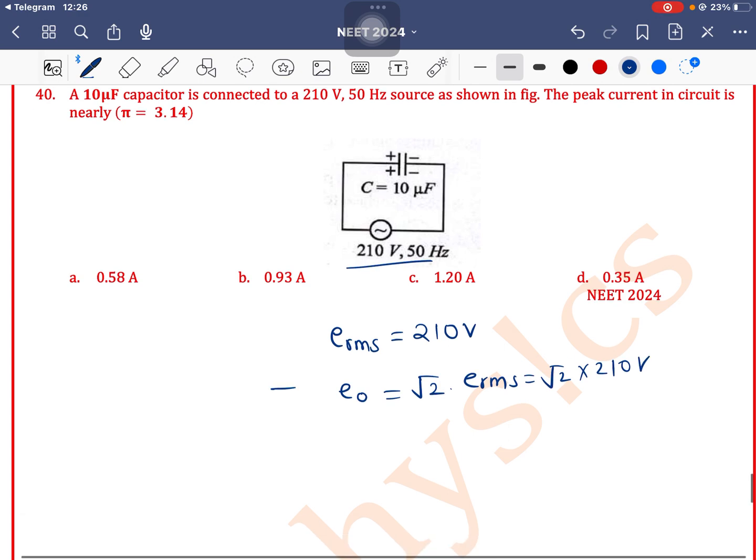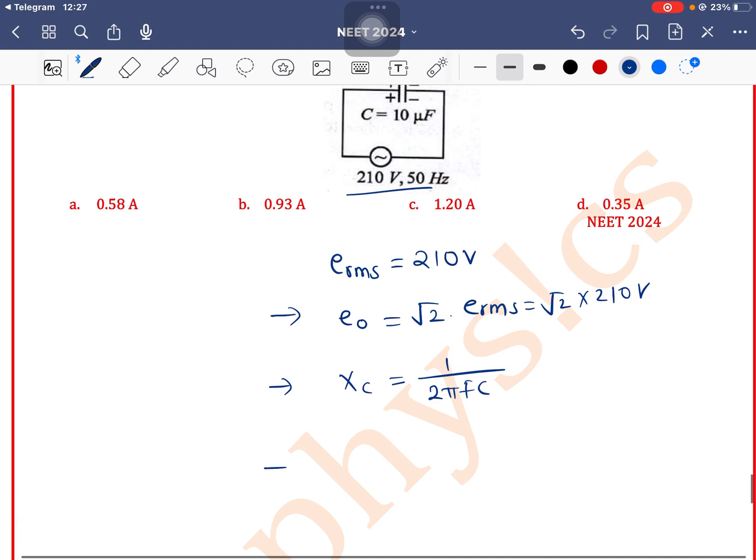And from this, as capacitance is given, we can find Xc. Xc is 1 by 2 pi fc. So the value of peak current is E0 by Xc, and E0 by Xc is equal to E0 by 1 by 2 pi fc.